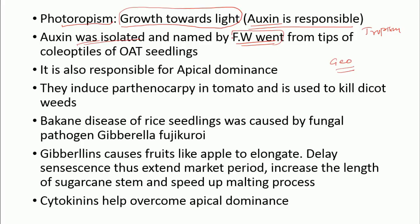Auxin was isolated by F.W. Went from the tips of coleoptiles of oat seedlings. Auxin is also responsible for apical dominance — auxin accumulates at stem tips and lateral branching stops. This process is called apical dominance, meaning lateral branches do not elongate. Auxin is also responsible for inducing parthenocarpy in tomato. It is also used to kill dicot weeds.